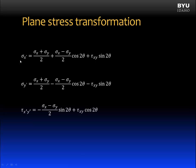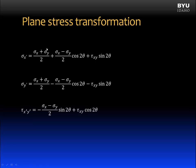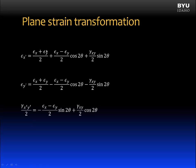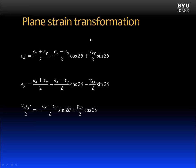Where we had sigma x in the plane stress transformation equations, we now have epsilon x, normal strain in the x direction. Where we had sigma y, we now have epsilon y, normal strain in the y direction. And where we had shear stress in the xy plane, we now have shear strain in the xy plane divided by two.